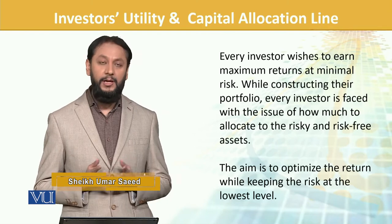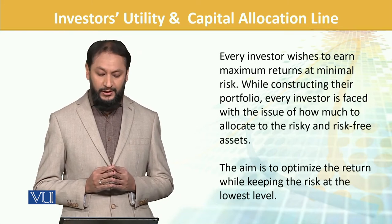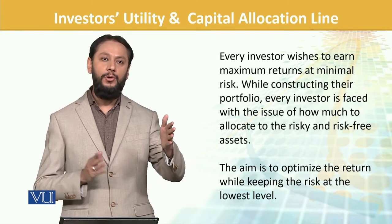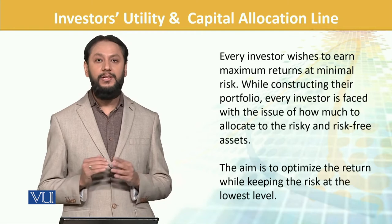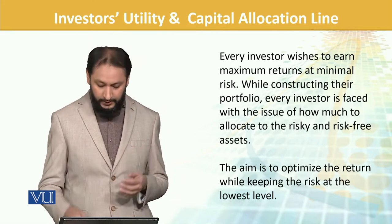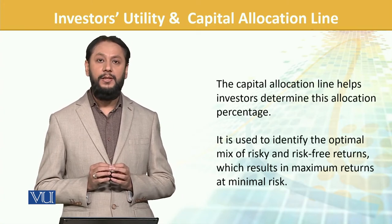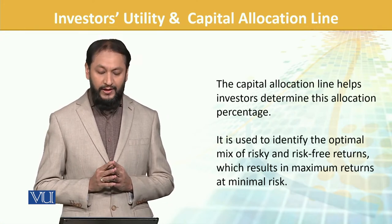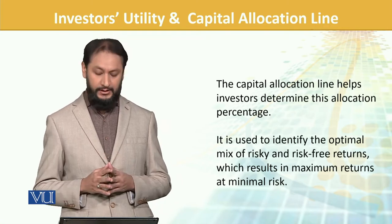Every investor wishes to earn maximum return at minimum risk — that is a general rule. While constructing their portfolio, every investor faces the issue of how much to allocate to risky assets versus risk-free assets. The aim is to optimize return while keeping risk at the lowest level. The capital allocation line helps investors determine this allocation percentage — how much mix of the two and what can be achieved at different risk levels.